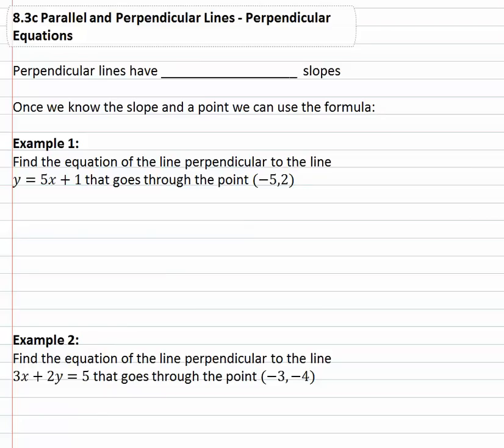In this video we're going to look at finding the equation of perpendicular lines. Perpendicular lines have opposite reciprocal slopes. Using this we can quickly find the slope of the line we want, and once we know the slope and a point, we can use the formula y equals mx plus b to solve for b, or the y-intercept.